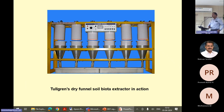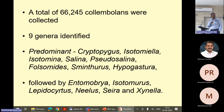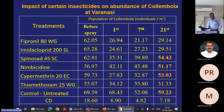This is the modified Talgrin funnel, in which we can modify the intensity of light so that the maximum number of insects can be collected. Our Varanasi soil is very much rich in these insects. This is a small experiment in a brinjal field — we collected more than 66,000 specimens and in simply the brinjal crop we found nine genera. These are some predominant genera and some less predominant genera.